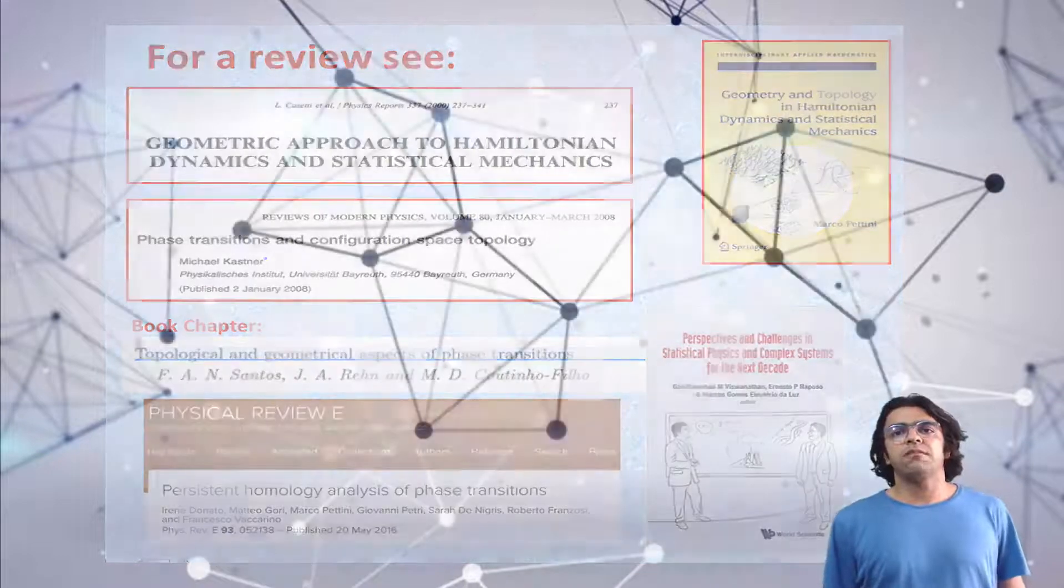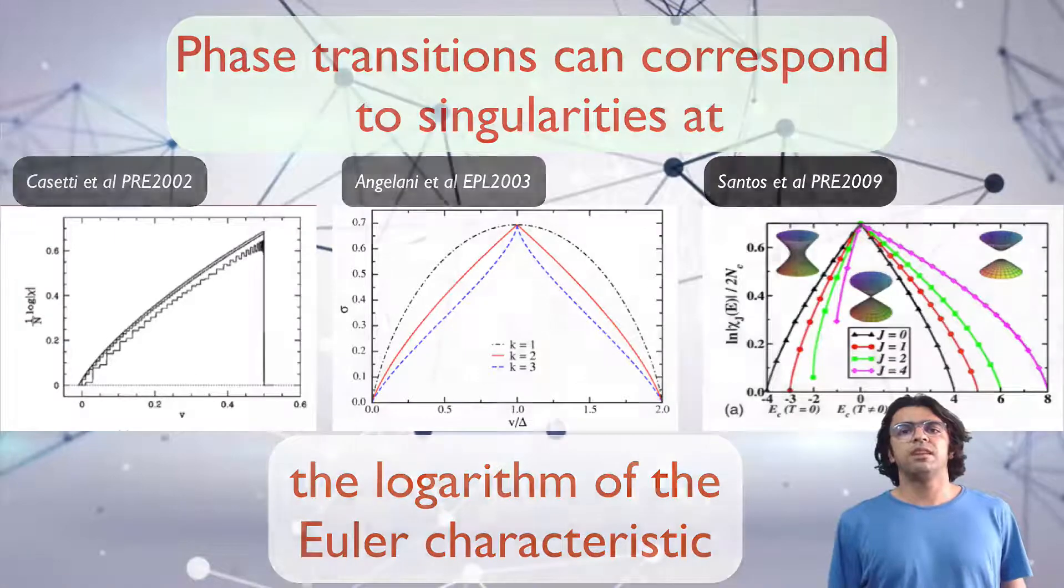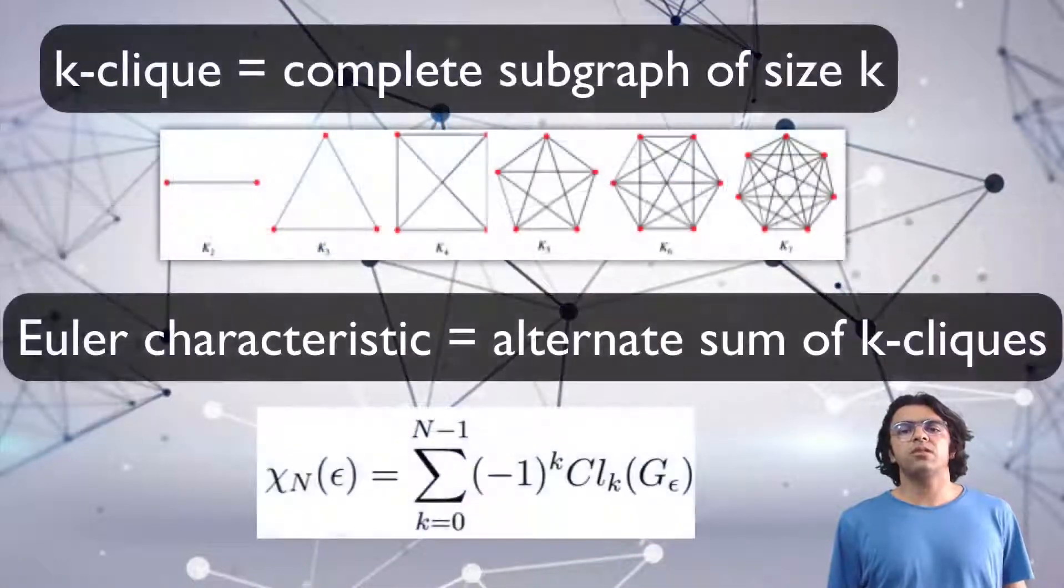Several papers have shown that a phase transition can correspond to singularities of the logarithm of the Euler characteristic. This invariant can also be studied in the context of networks.